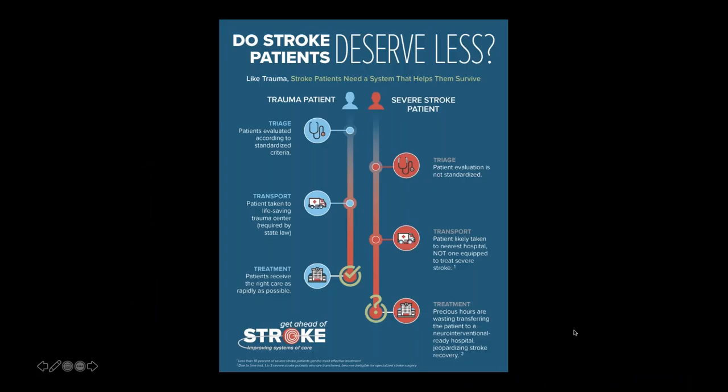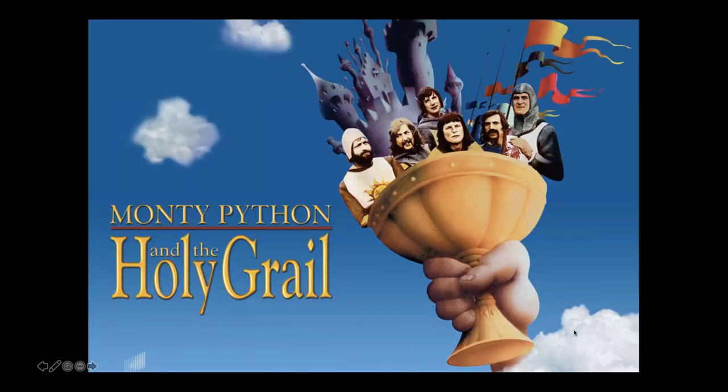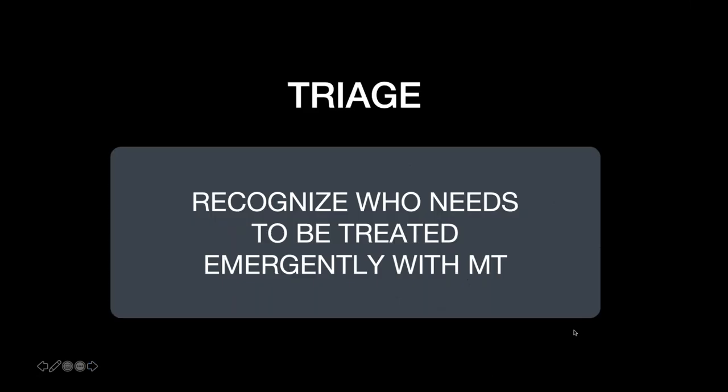We took models from other medical worlds dealing with time-sensitive therapies. The trauma world had this figured out for years — a very standardized triage criteria where patients are transported to level one, two, or three trauma centers with the appropriate level of care. None of that was in place for stroke. The holy grail starts with recognizing who is that large vessel occlusion stroke patient on the time-urgent pathway that we need to get to the correct center. Triage is at the heart of it all.